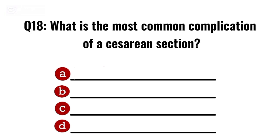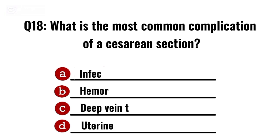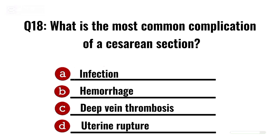Question 18. What is the most common complication of a caesarean section? Correct option A: Infection.